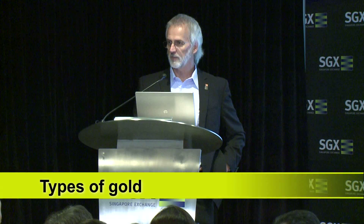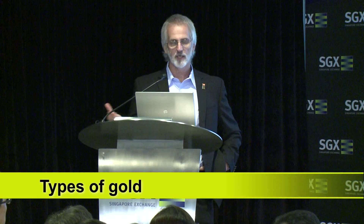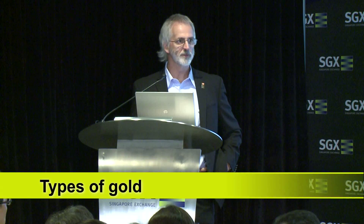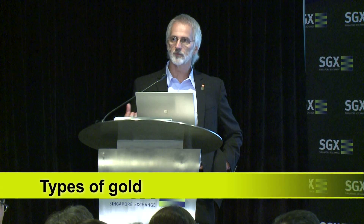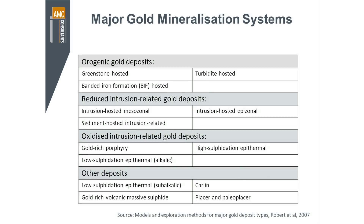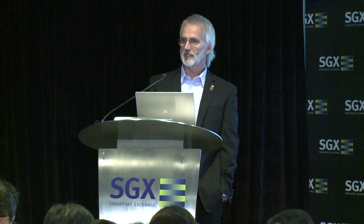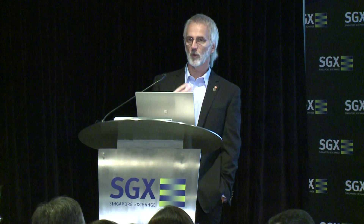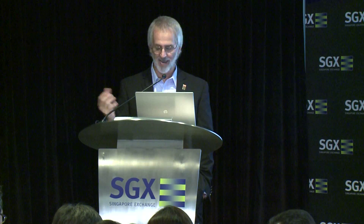This is a relatively simple breakdown, but it shows you that fundamentally we categorise gold into four major types based on how it's formed and where you find it. We have reduced intrusion-related gold deposits, oxidised intrusion-related gold deposits, and then a catch-all that fits everything else. These are the four key classes of gold deposit.